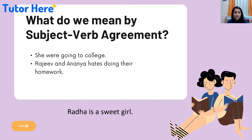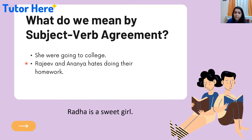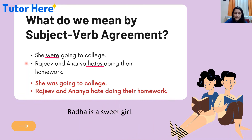You can see this sentence: 'Radha is a sweet girl.' In a sentence we have a subject, verb, as well as an object. Here Radha is the subject and 'is' is the helping verb. The subject and verb are agreeing because the sentence is grammatically correct. But in these two sentences — 'She were going to college' and 'Rajiv and Ananya hates doing their homework' — they are grammatically incorrect. The correct answers are 'She was going to college' and 'Rajiv and Ananya hate doing their homework.' We will be looking at subject-verb agreement through different rules.